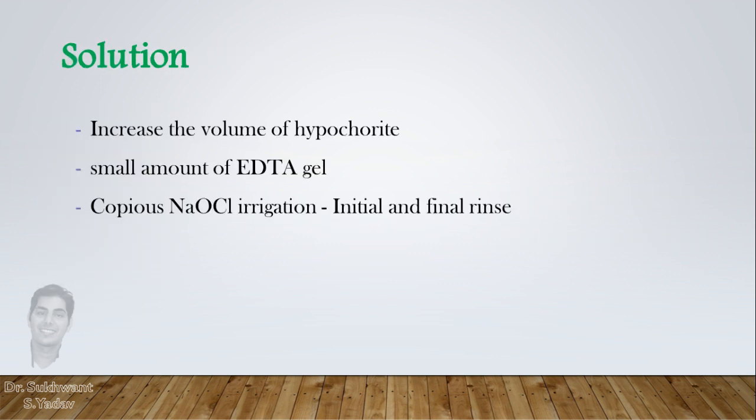To address this problem, I suggest some solutions. First, increase the volume of sodium hypochlorite and irrigate frequently to replace the free chlorine ions and maintain efficacy. Second, use a very small amount of EDTA gel, because its efficacy depends upon contact point, not on volume. Copious sodium hypochlorite irrigation at the start of BMP, when there is no EDTA, can be very effective in removing loose debris.